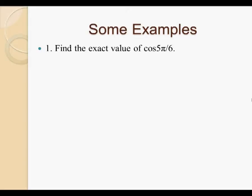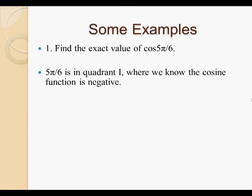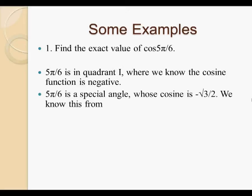First example question we're going to look at is find the exact value of cosine 5 pi by 6. 5 pi by 6 is in quadrant 1, where we know the cosine function is negative, quadrant 1 being the top left function in the Cartesian plane. 5 pi by 6 is a special angle, whose cosine is negative root 3 over 2. We know this from one of three ways we could look it up. When we're first starting out learning these sorts of materials, this is the way we would find the answer, by merely looking it up. However, this is not optimal. Memorizing is better.